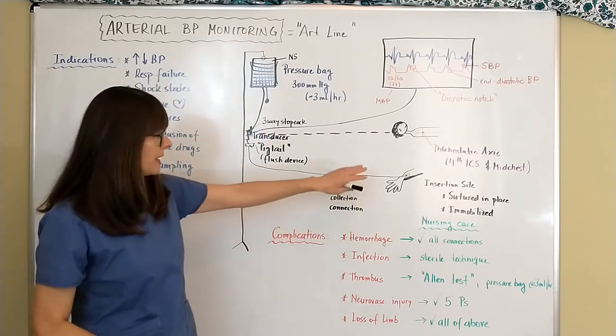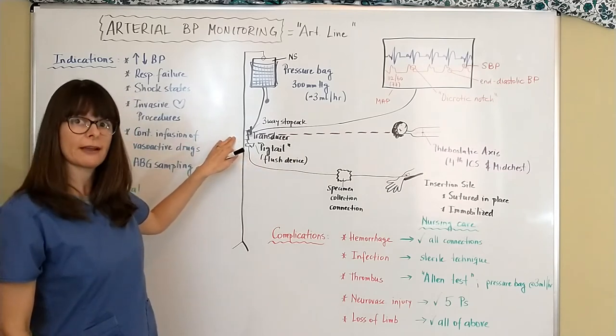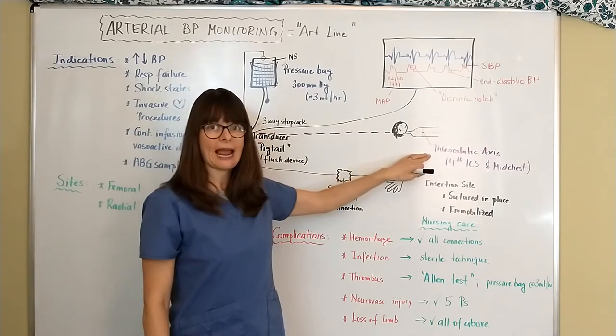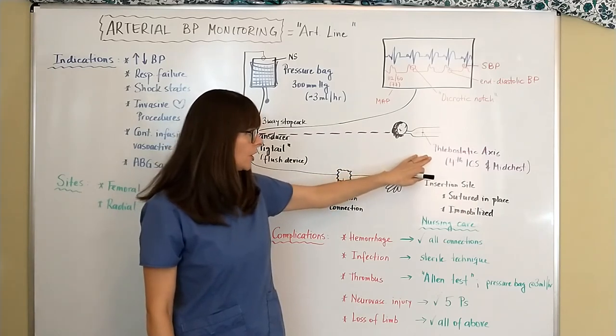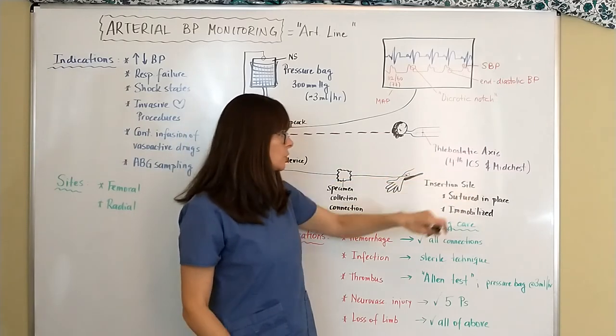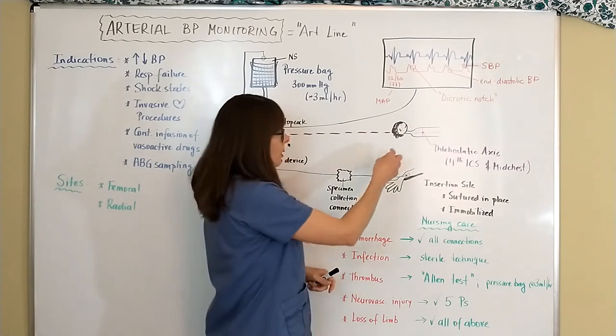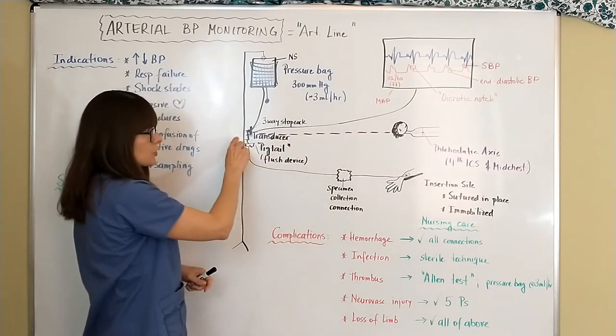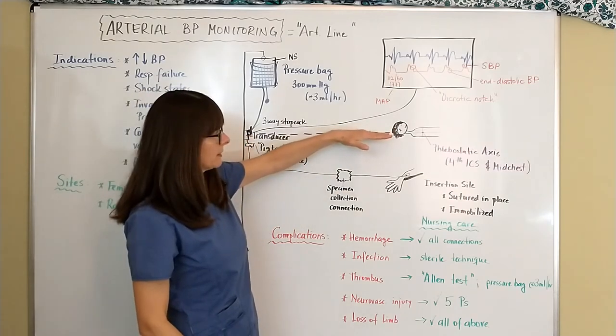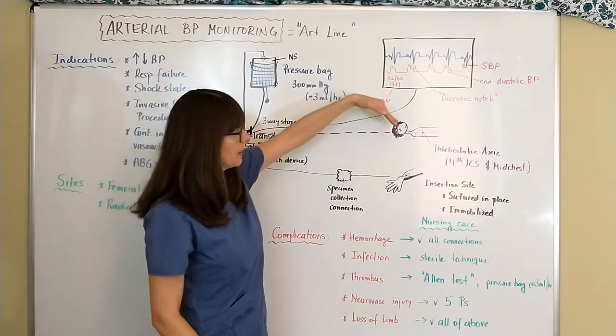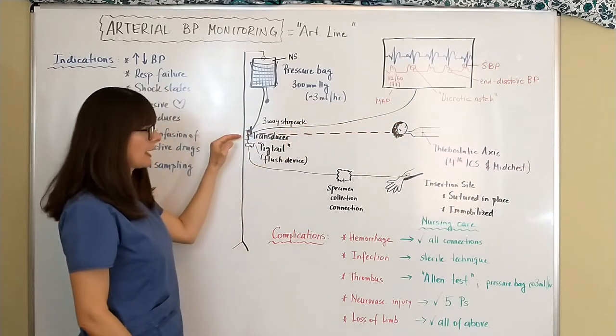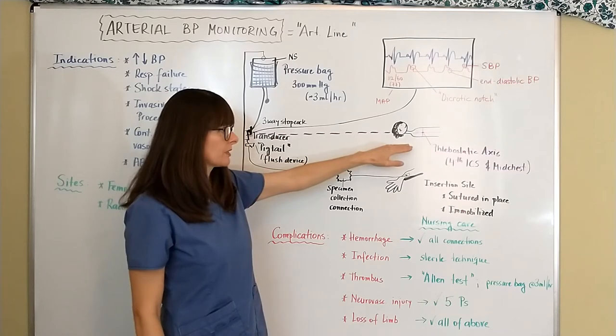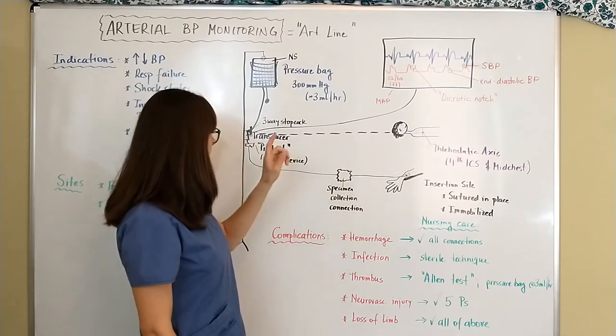Now let's look at our patient. So the transducer that we have attached to the IV pole here needs to be lined up with what's called the phlebostatic axis and the landmarks for that are the fourth intercostal space and the mid chest. So you would march down the fourth intercostal and then find the mid chest of the patient and line this up with the transducer. If the patient's bed gets elevated or lowered or the head of the bed moves up or down, this will no longer be lined up and will not give us accurate results.